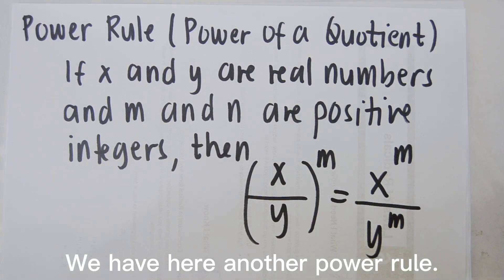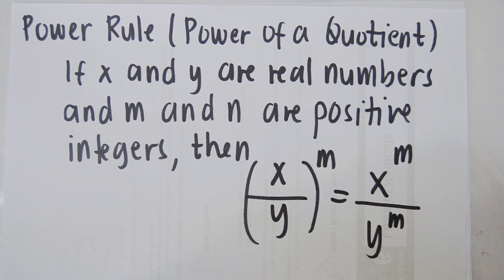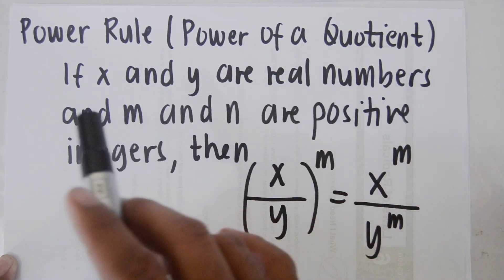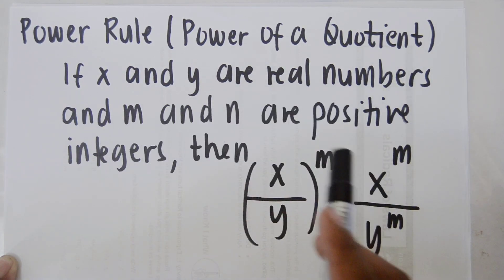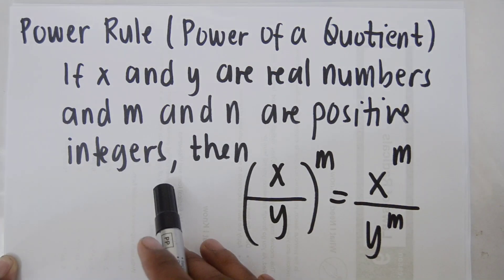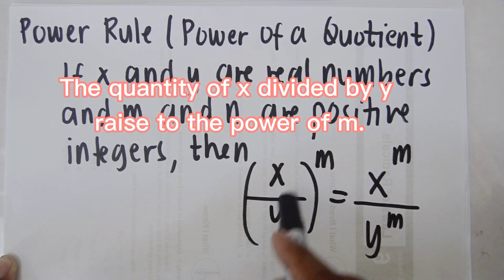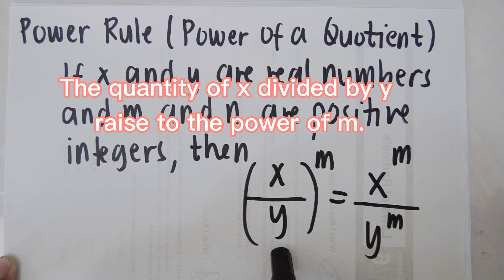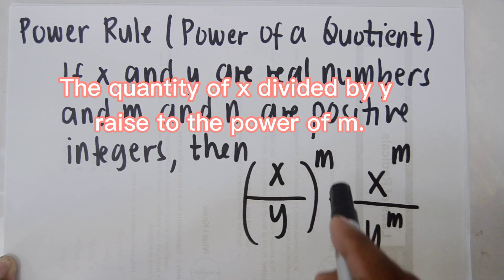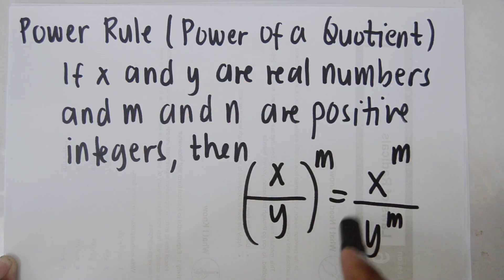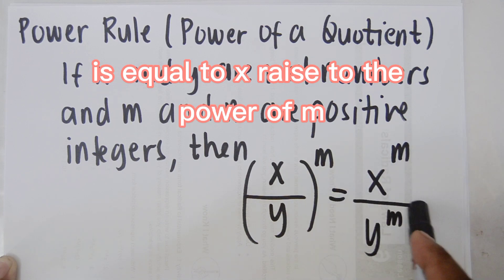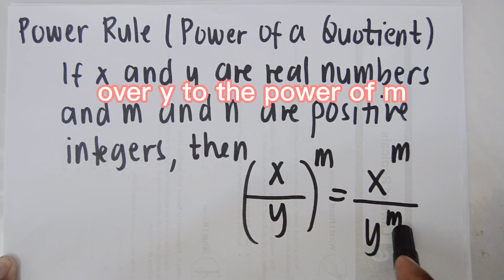We have here another power rule: the power of a quotient. If x and y are real numbers and m and n are positive integers, then the quantity of x divided by y raised to the power of m is equal to x to the power of m over y to the power of m.